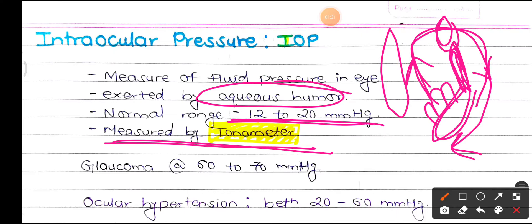If there is an imbalance between the rate of formation and rate of drainage, there is a buildup of pressure. This pressure is exerted on the lens and the vitreous chamber, and this pressure is known as intraocular pressure. So this is the basis of the intraocular pressure.